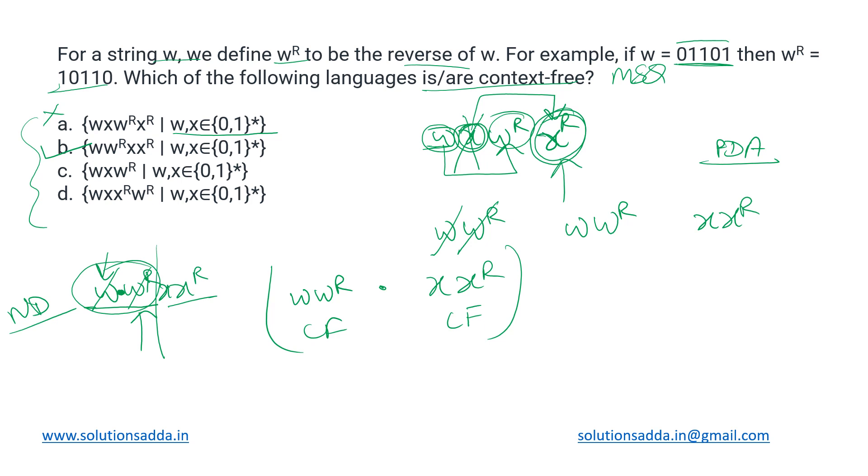Then in the same way, coming to the third one: it is w x w^r. Here the restriction is same - both w and x belong to {0,1}*. So here what we can do is there are two options: either we can set this x to be a null string, then this will simply be converted into w and w^r, which will represent an even-length palindrome. Or we can set this x to be a string having length 1, in that case x will represent our midpoint and we will be having an odd-length palindrome.